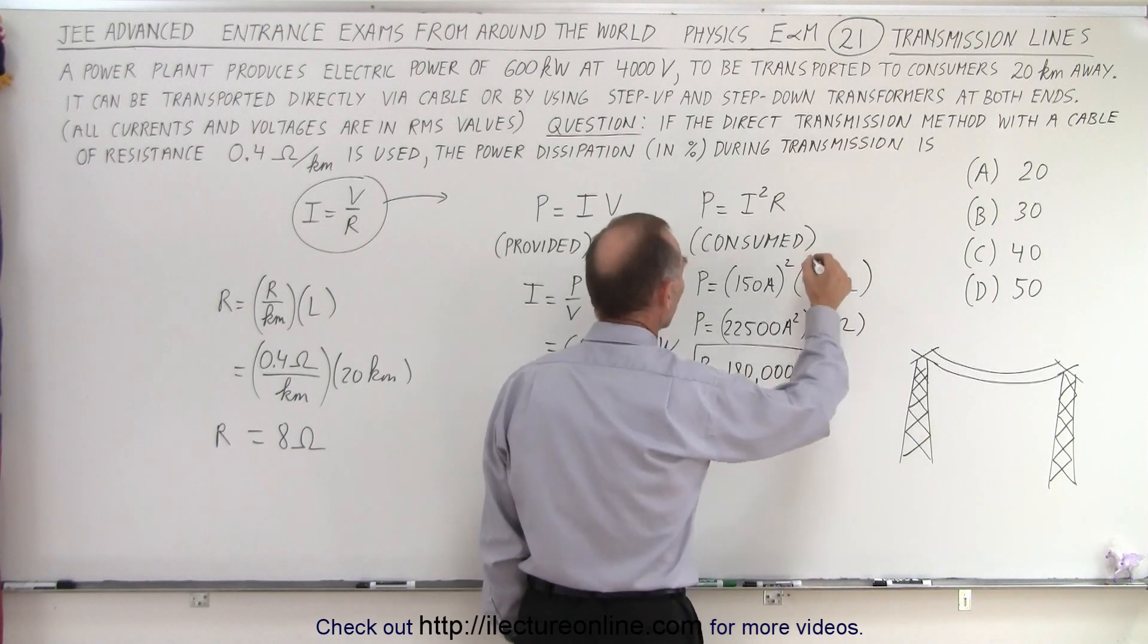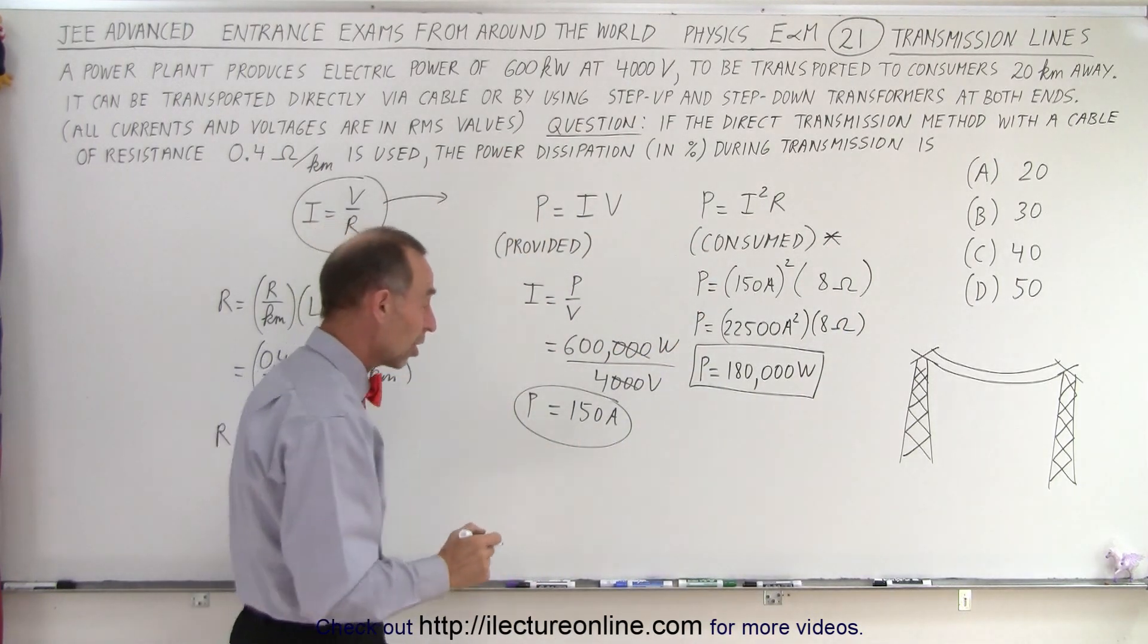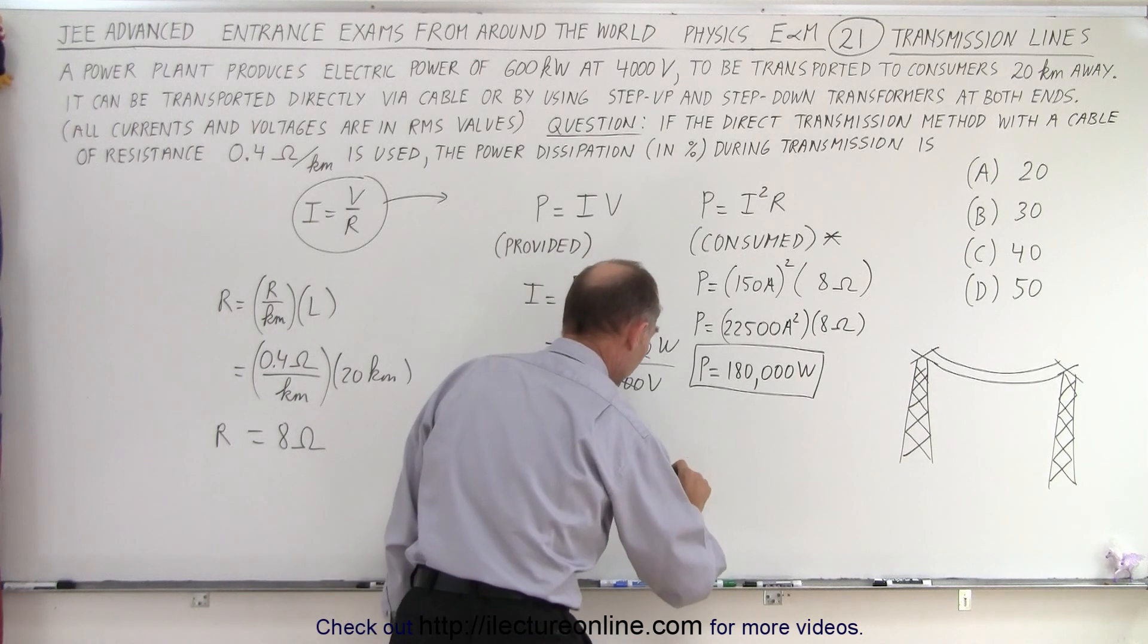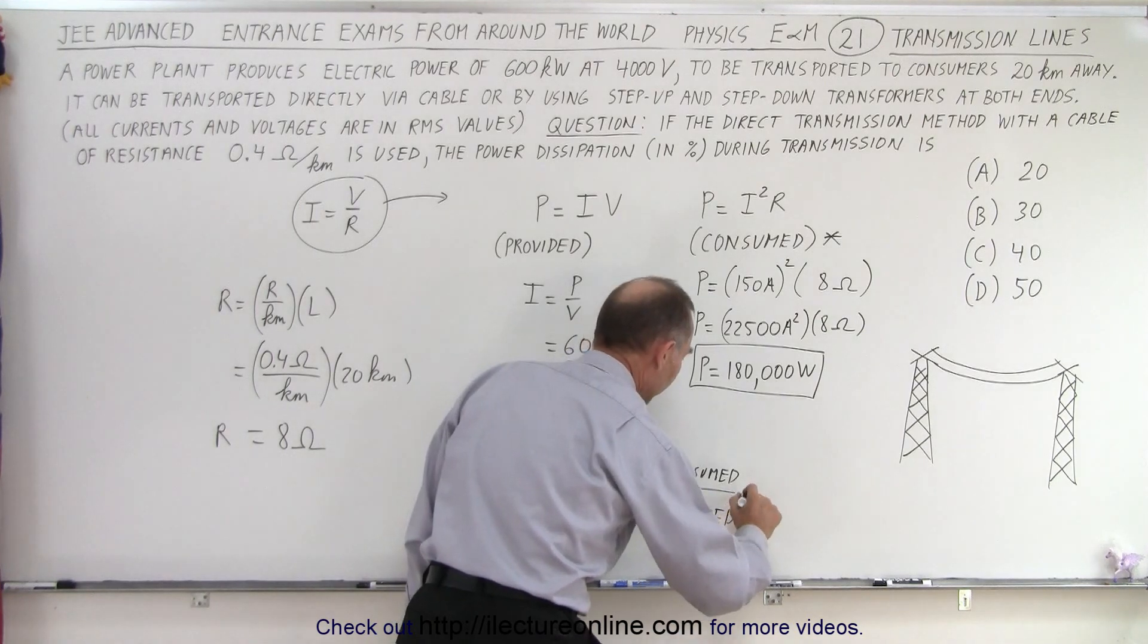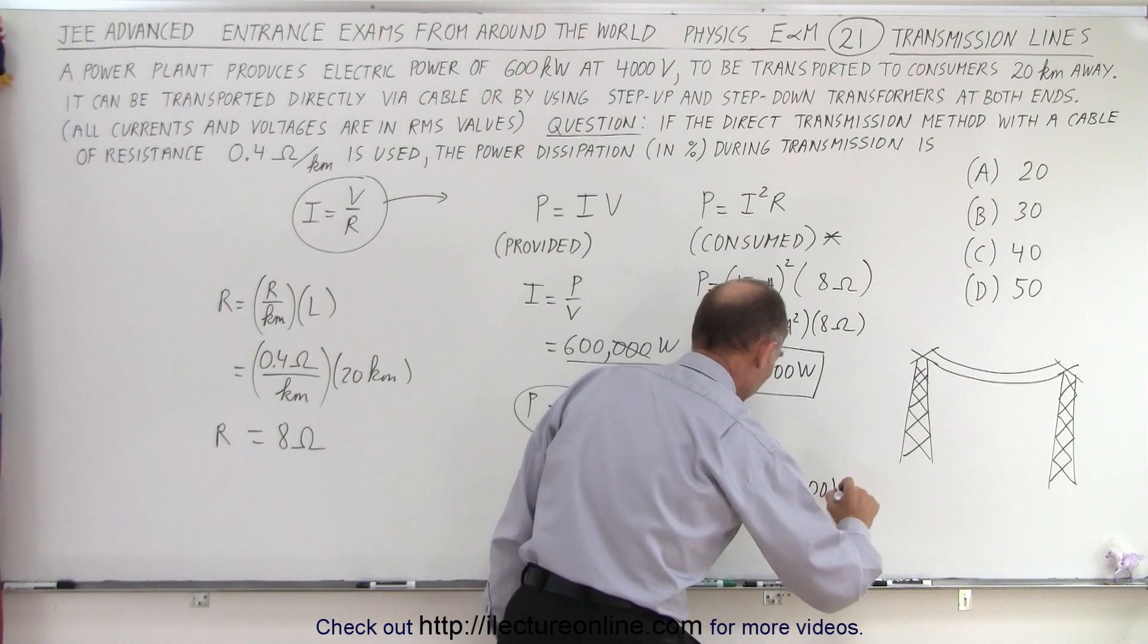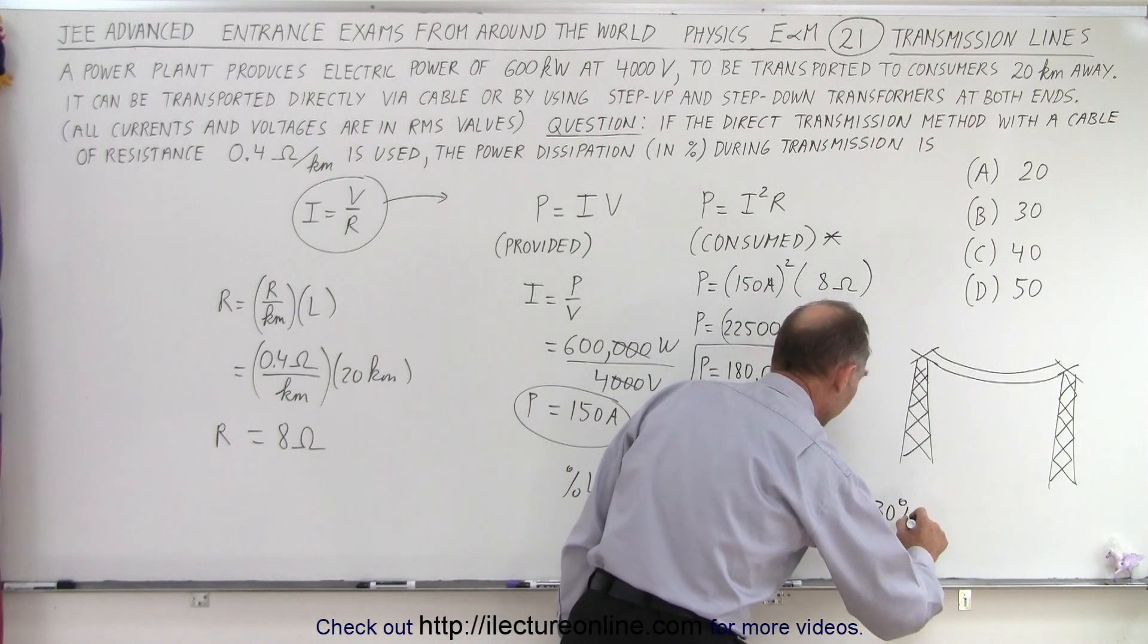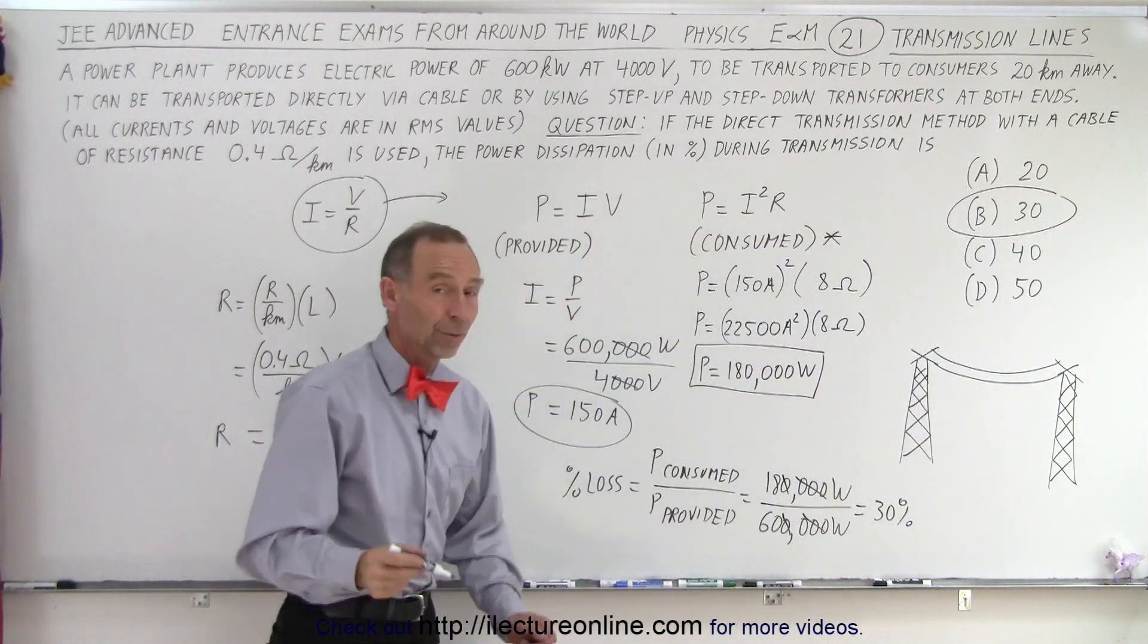So that's power consumed when you provide a power of 600 kilowatts. So what is the percentage loss? Percent loss is equal to the power consumed divided by the power provided. So in this case, consumed 180,000 watts, power provided 600,000 watts, 18 over 60, that is 30 percent. And up here, answer B has the correct number.